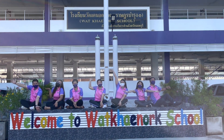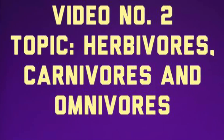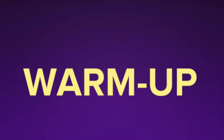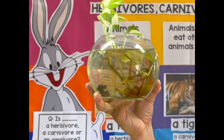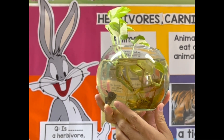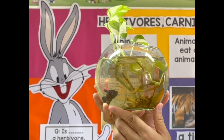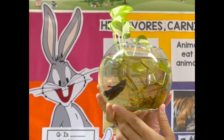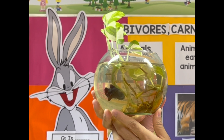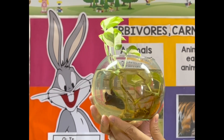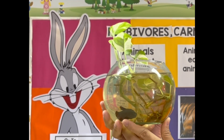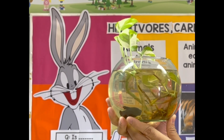Welcome to Watkendorf School! Before we begin our lesson, let me ask you: what animal do you see in the fishbowl? Great! There's a fish in the fishbowl. Do you know what fish eats? Yes, we are going to find out what animals eat and we are going to learn about the different groups of animals according to the food they eat.